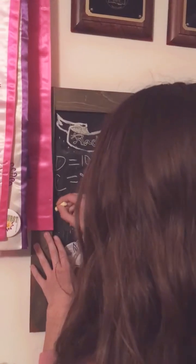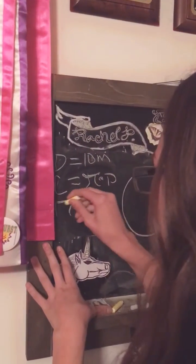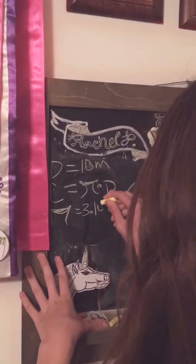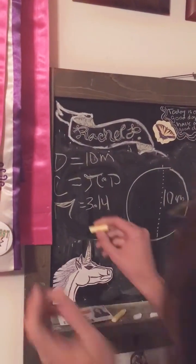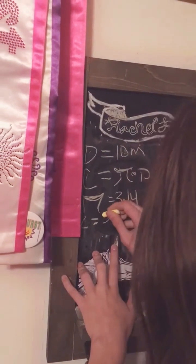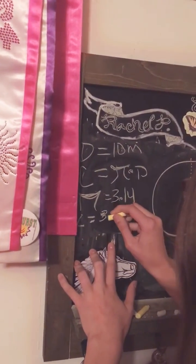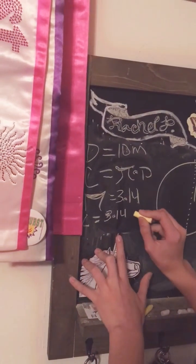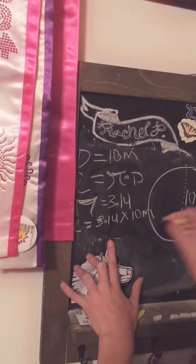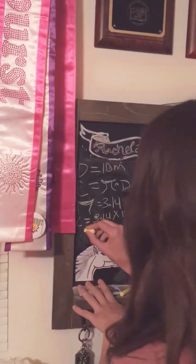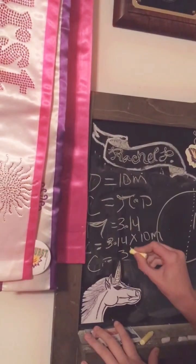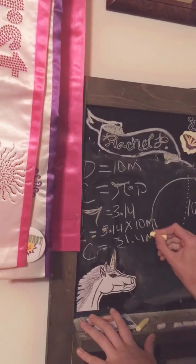So we know that pi equals 3.14. Let's do c equals 3.14 times 10 meters. Now we know that the circumference equals 3.14 meters.